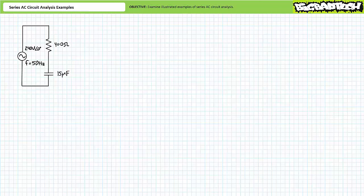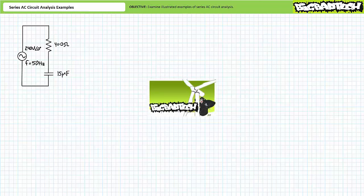Good day and welcome to Big Bad Tech. I'm your instructor Jim Pytel and today we'll examine several illustrated examples of series AC circuit analysis. This lecture operates under the presumption the viewer has more than a passing familiarity with series AC circuit properties including Kirchhoff's voltage law and can wield the AC voltage divider rule without cutting themselves. If you lack the requisite level of familiarity with these topics, please review the supporting material of the Big Bad Tech channel and return to this lecture when you are so qualified.